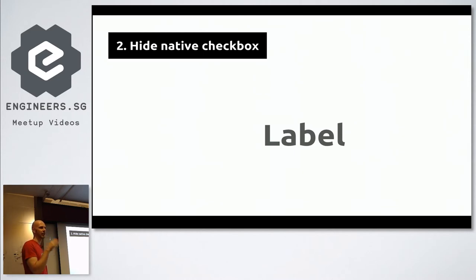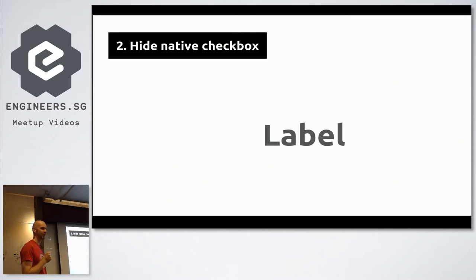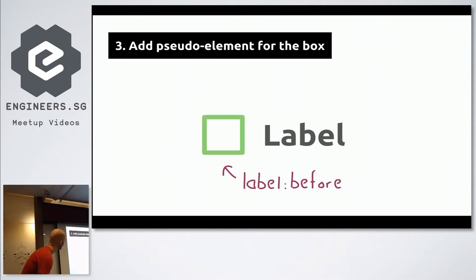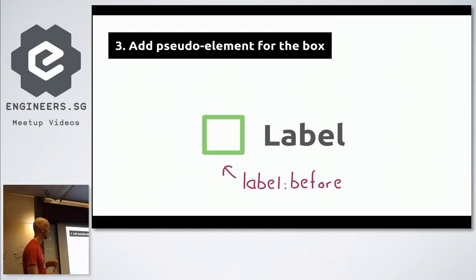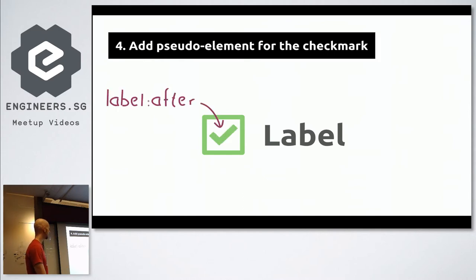I need to hide the ugly native checkbox first, because otherwise it will be on top of the new one — so far you cannot style the checkbox itself, maybe in the future. That's also what I thought in 2001 when I was trying to do fancy checkboxes. Then I add a pseudo-element for the box. As a refresher there's the box and there's the check thingy. I decided to make a pseudo-element inserted before the label. And for the check mark, I used another pseudo-element that is after the label — but that leads to some positioning shenanigans we'll come to later.